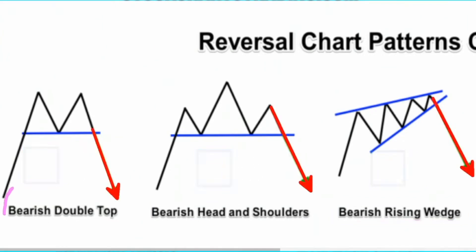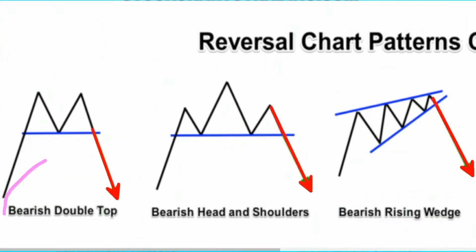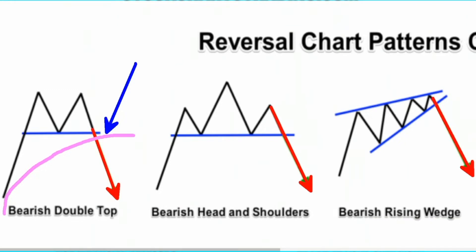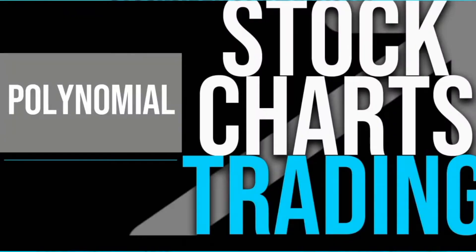If I were to use a moving average, I wouldn't clearly be able to identify where to enter into the trade until we went under the moving average, which leads to a missed opportunity of making profits. And when shorting the market, we want the best opportunities — smallest amount of risk, biggest reward. That's why I like using the polynomial channels.